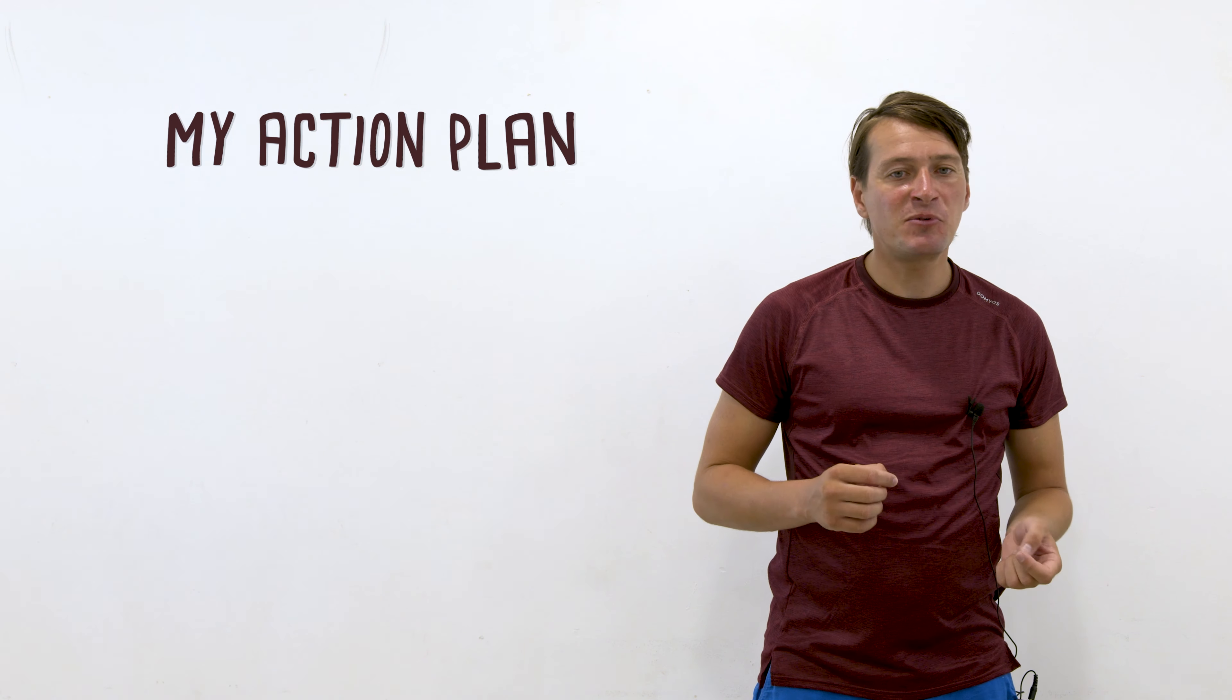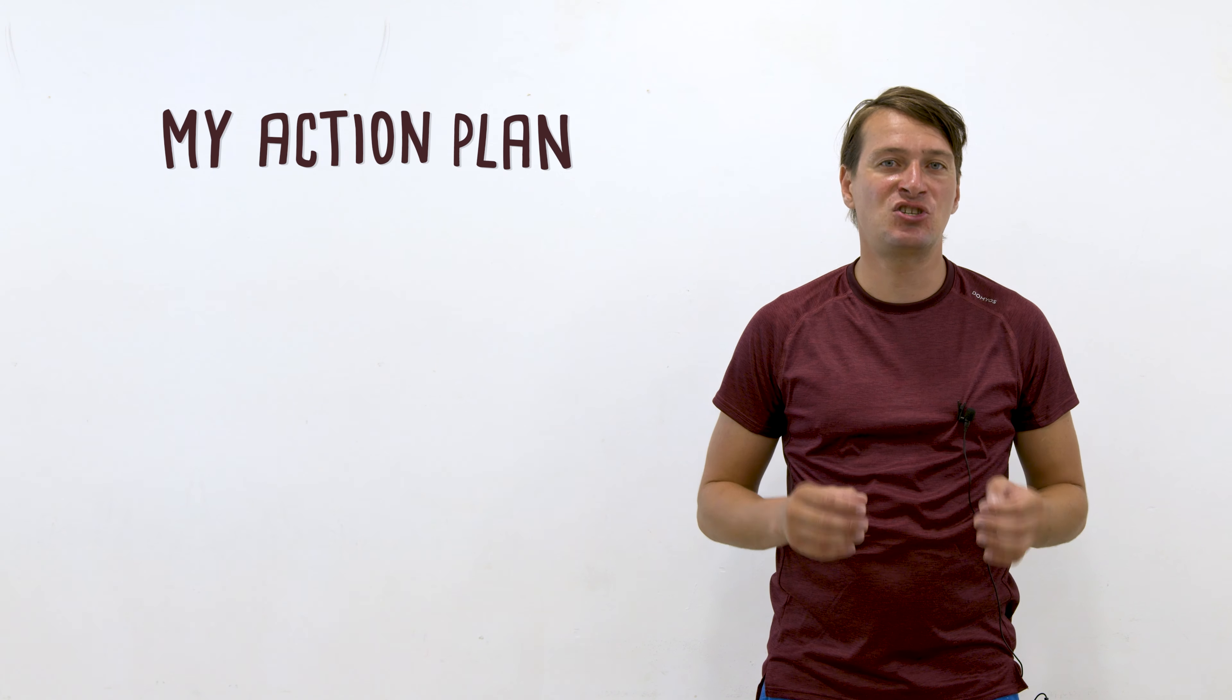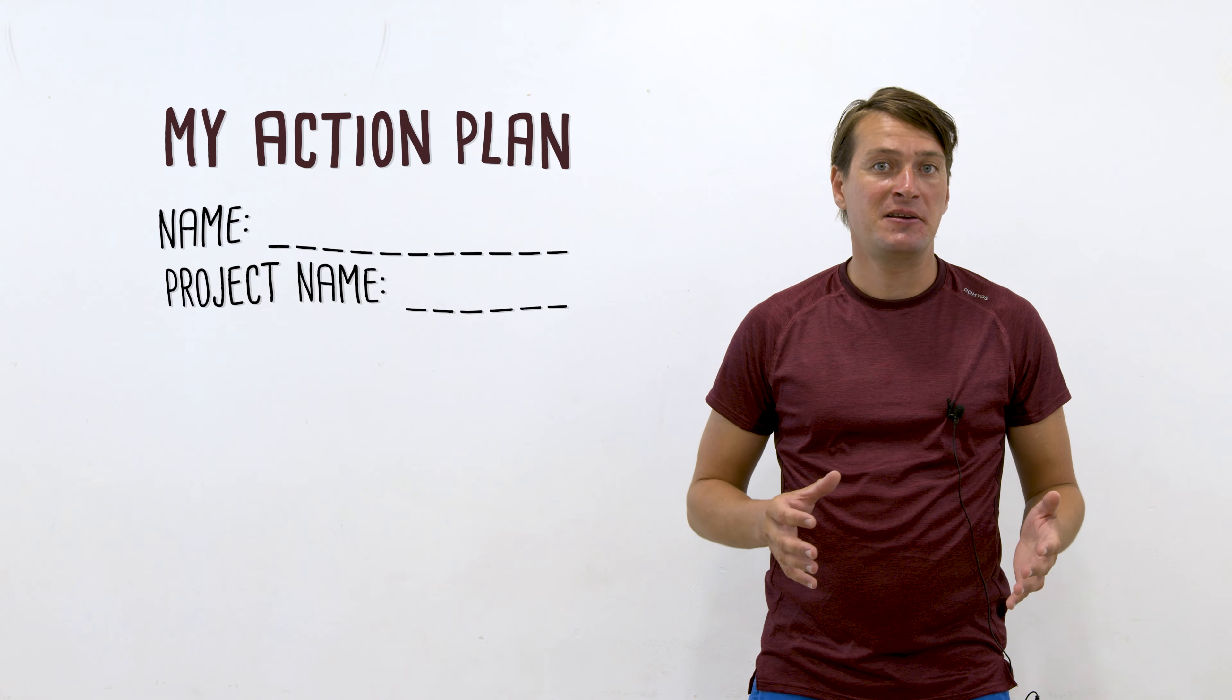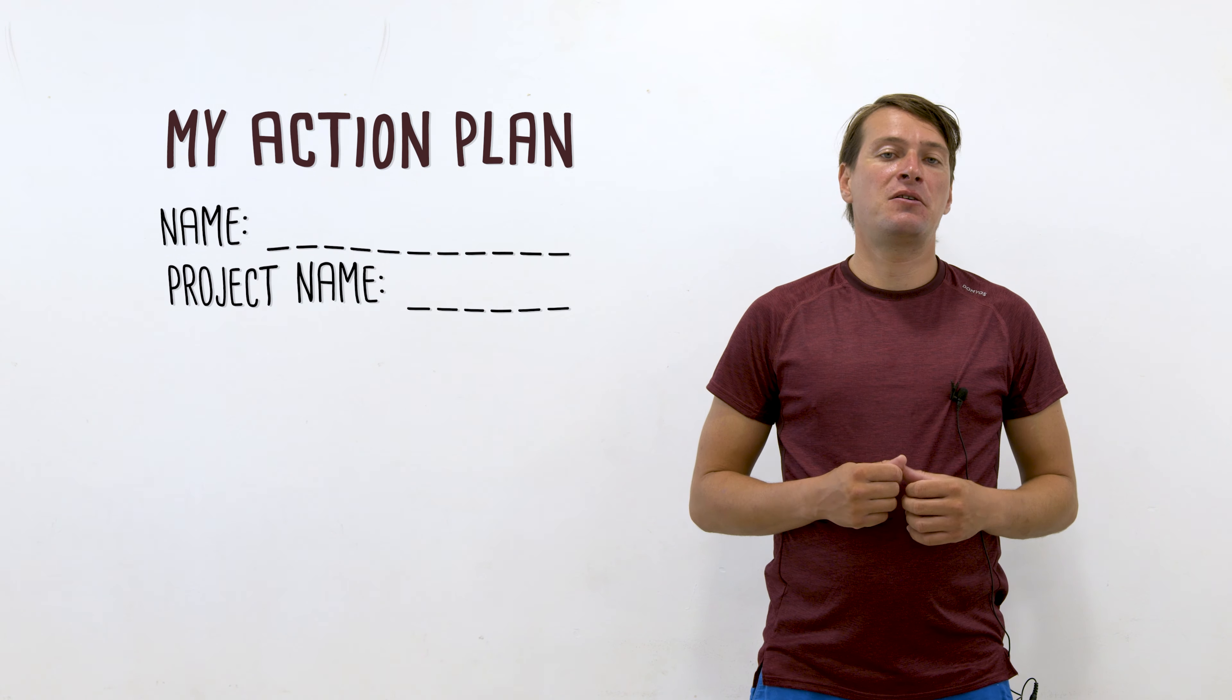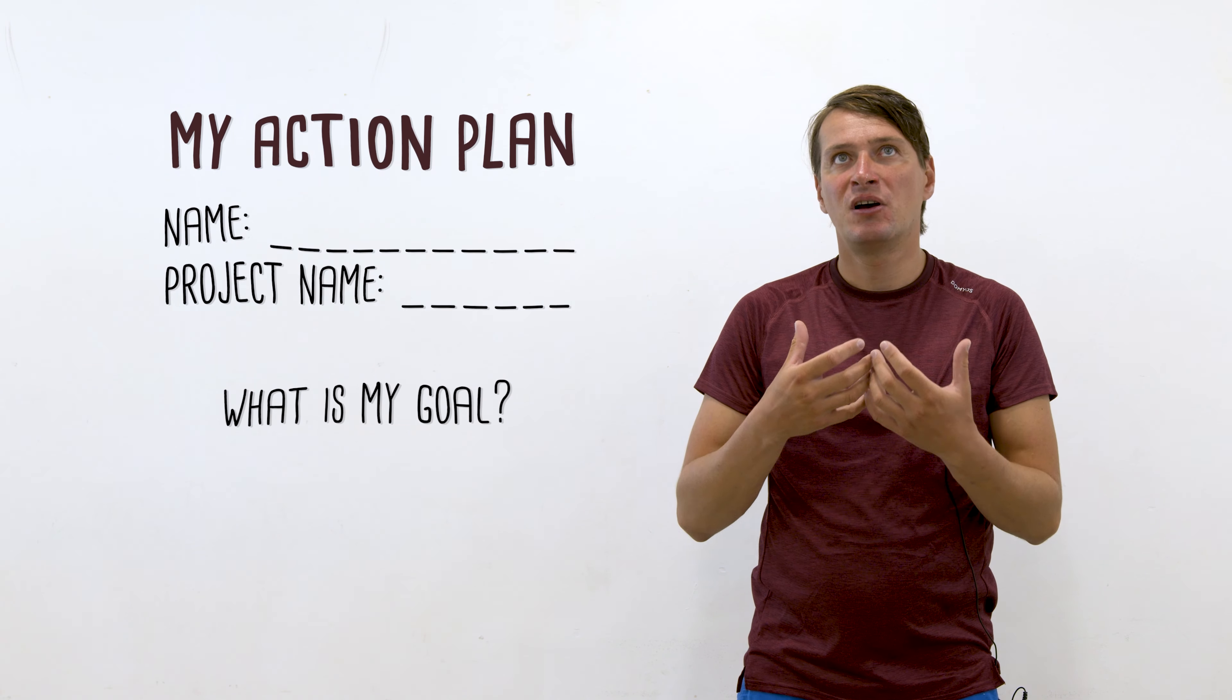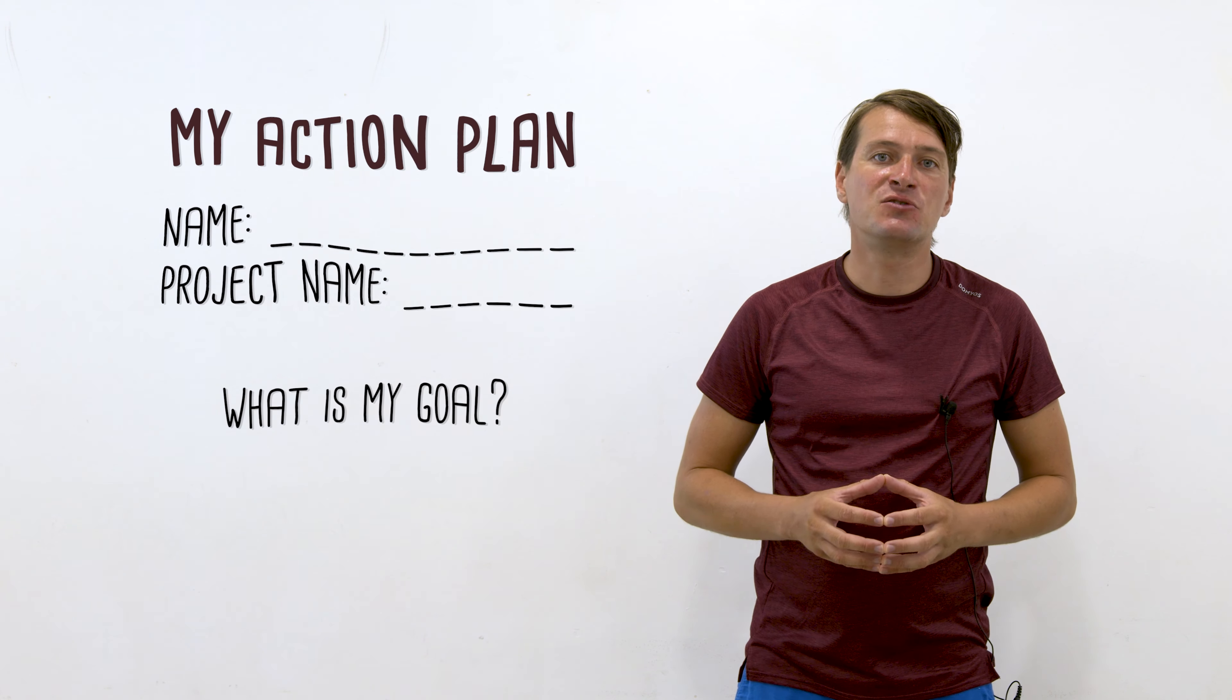So this action plan should not be very elaborate, should contain minimum but very key information such as the name of the young person who is going to deliver the plan, the name of the project he or she might be involved in, and of course what is the goal of the project, what he or she would like to address, what problem to solve by implementing his or her initiative.